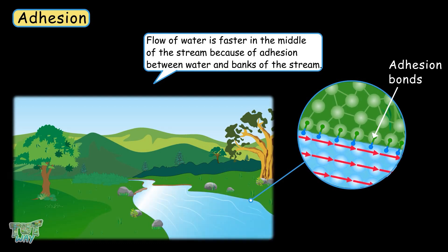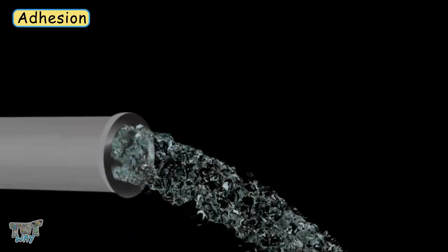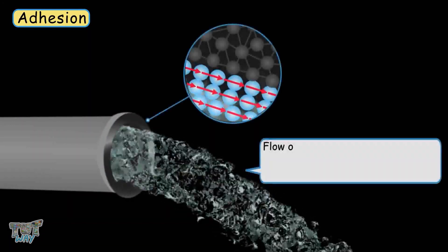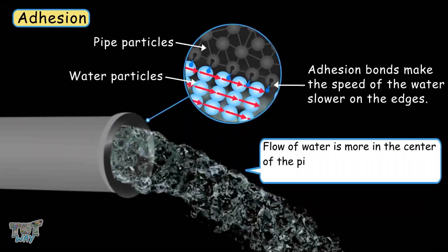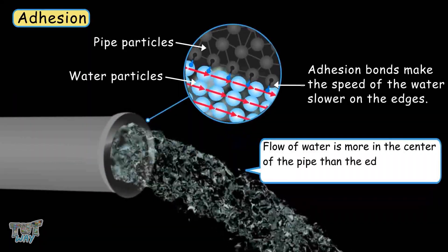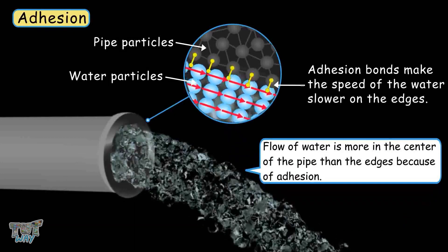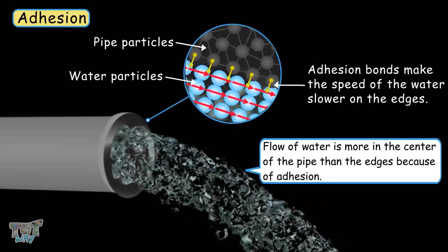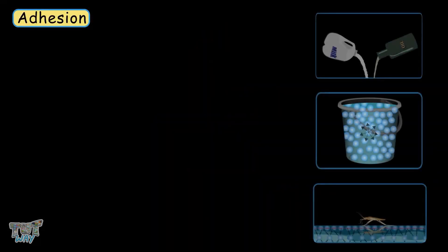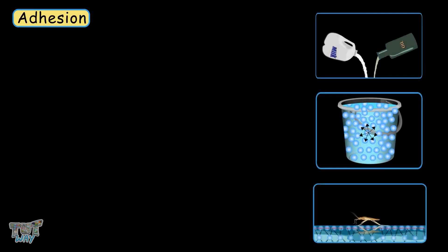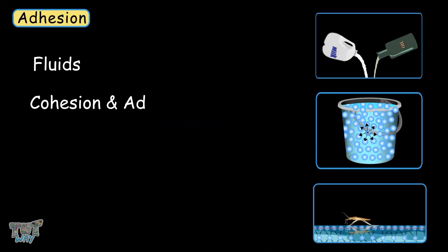The same is true in the case of pipes and tubes. Flow of water is always greater in the middle or center of the tube or pipe because on the edges it experiences adhesion. So friends, today we have learned a lot about fluids, cohesion, adhesion, and surface tension.